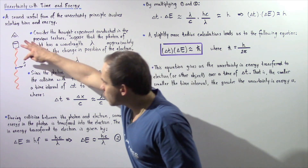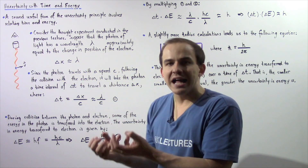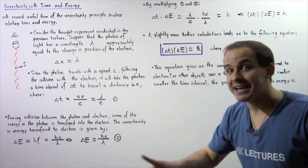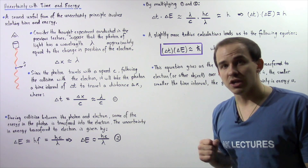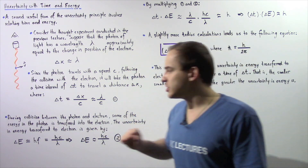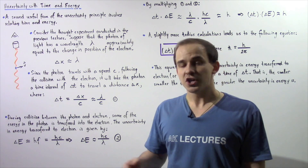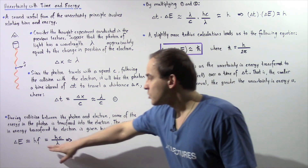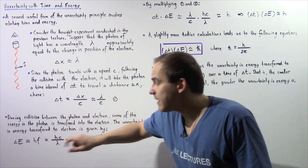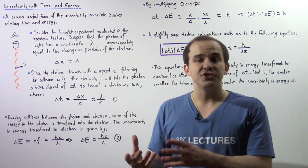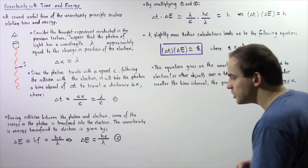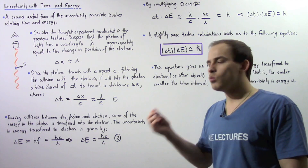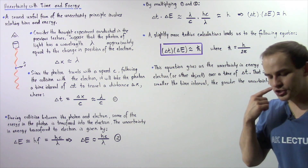During the collision between the electron and our photon of light, some of the energy that the photon has is transferred to that electron. The uncertainty in energy transferred from the photon to the electron is given by: delta E is approximately equal to h — Planck's constant — multiplied by the frequency. Since frequency equals c divided by lambda, we replace f with c divided by lambda. So the uncertainty of the energy during our collision is approximately equal to h multiplied by c divided by lambda, where lambda is the wavelength of light used. Let's call this Equation 2.